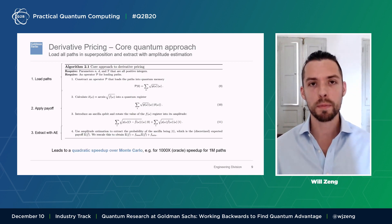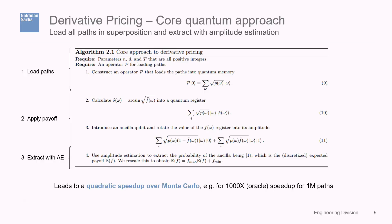The core quantum approach here has a few steps. The first step is to load all possible paths of these stochastic processes into a weighted superposition in quantum memory. Then for each path, you calculate the payoff — this is a classical function that you need to reversibly implement in a quantum method using as few resources as possible. Then you extract the expected value of the payoff using amplitude estimation. This results in a quadratic speed-up over Monte Carlo. If you're using, say, a million paths, the speed-up could be something like a thousand times faster, which is incredibly significant.